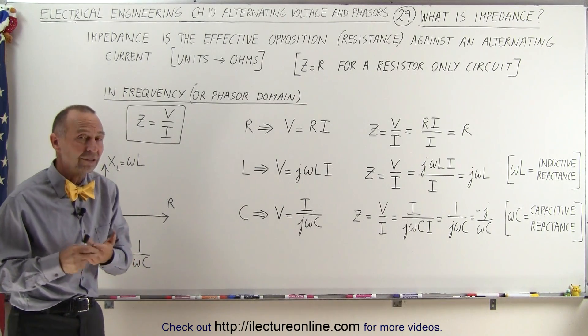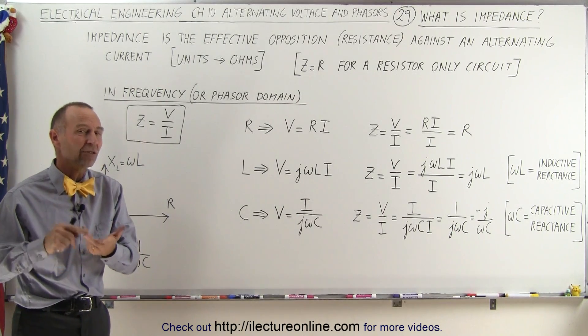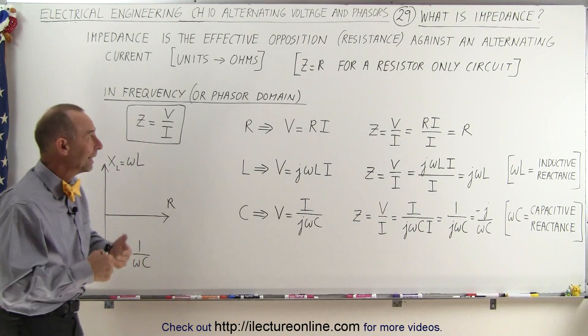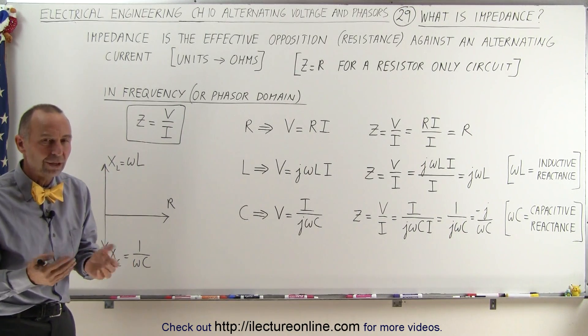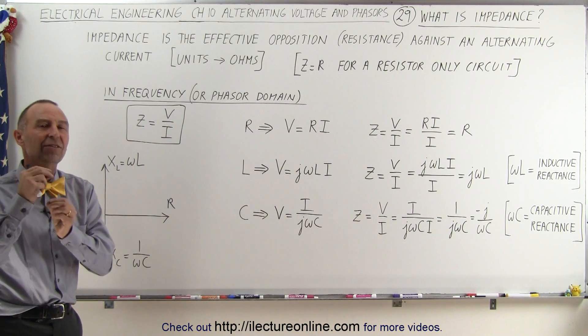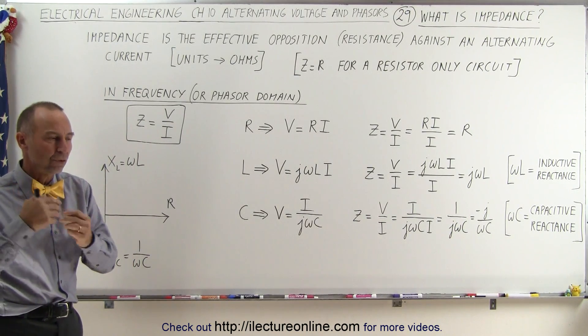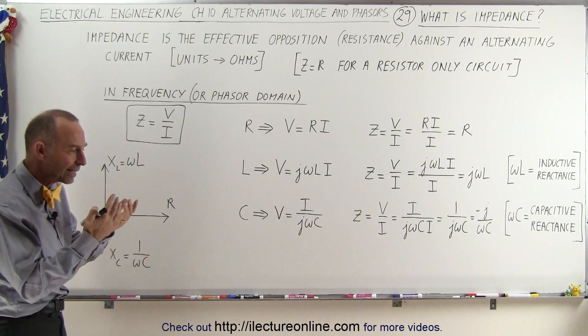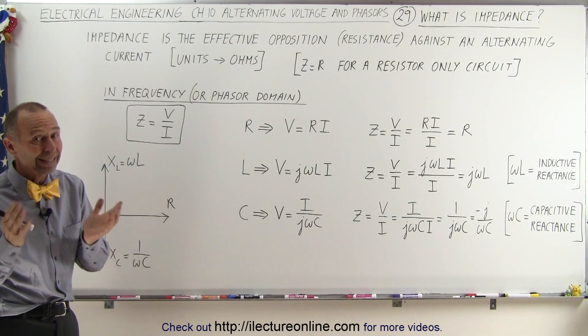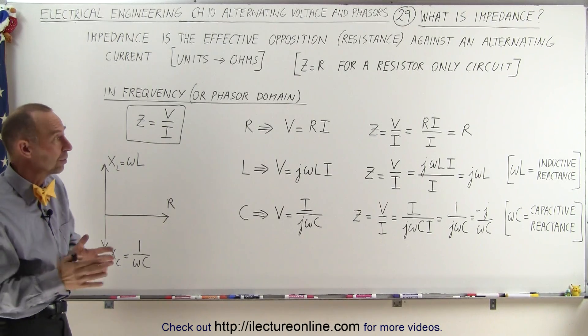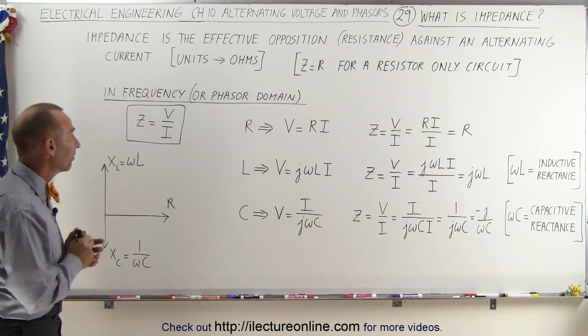But if you also have capacitors and inductors, and you have a time-varying current, then impedance is the best way to calculate the opposition to the current because it takes into account the phase differences.